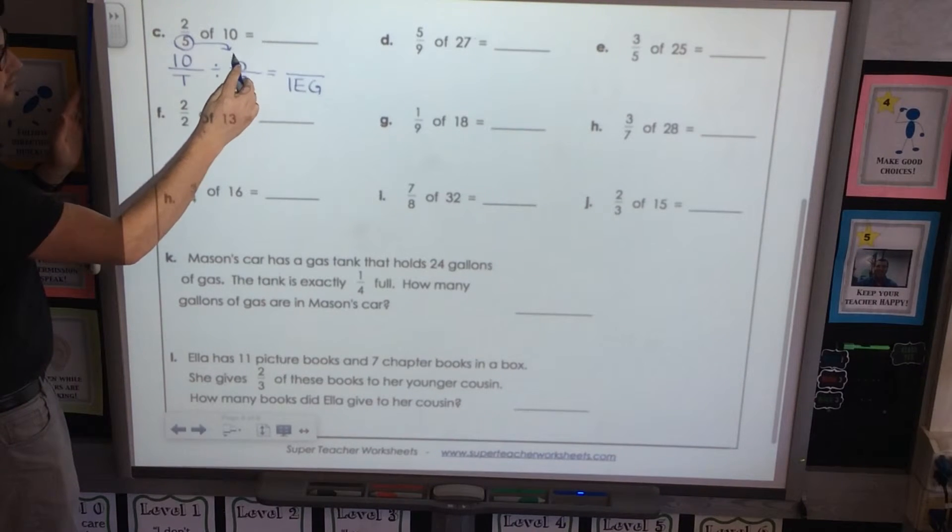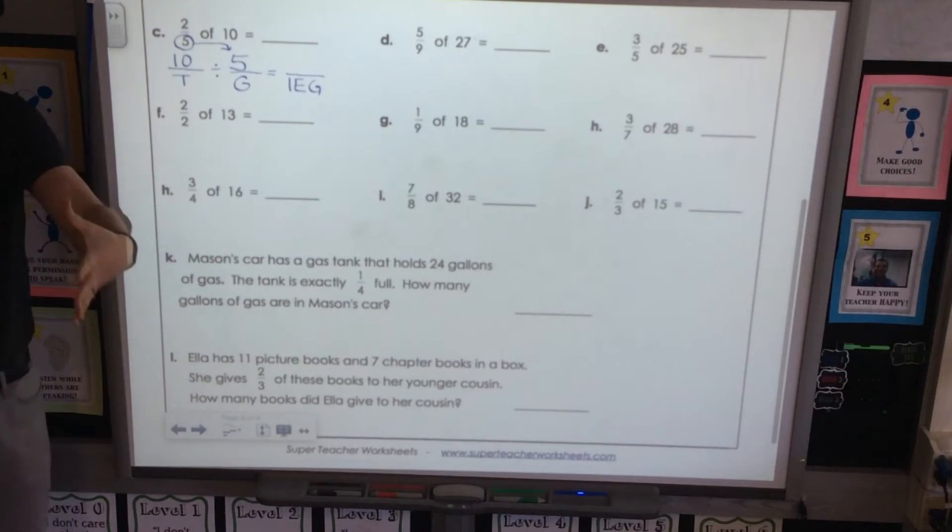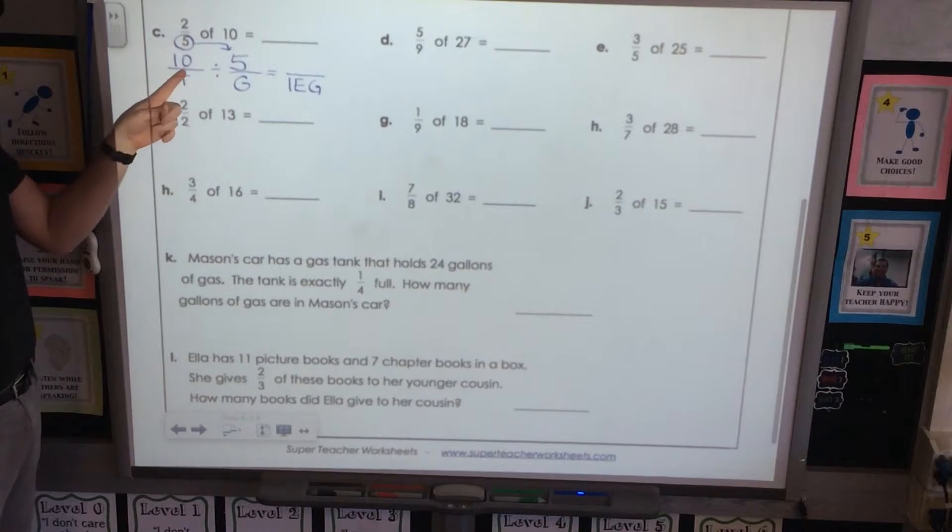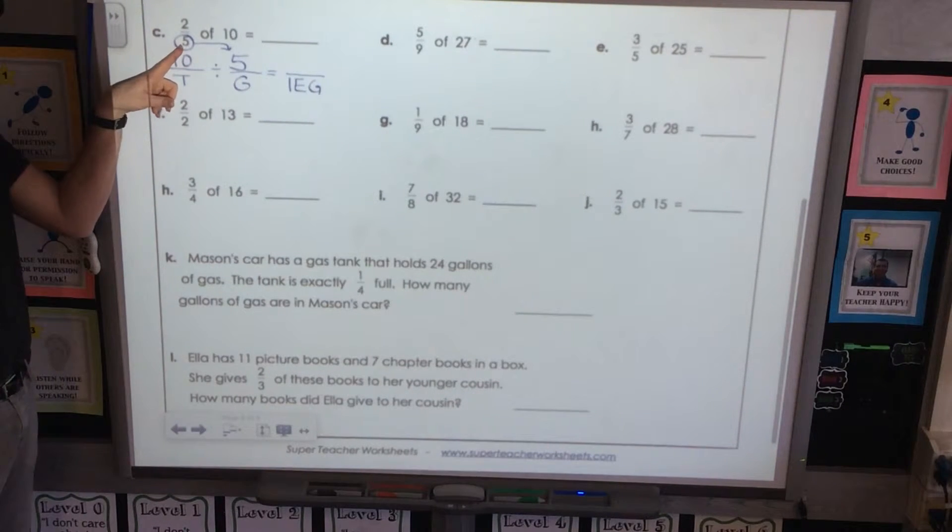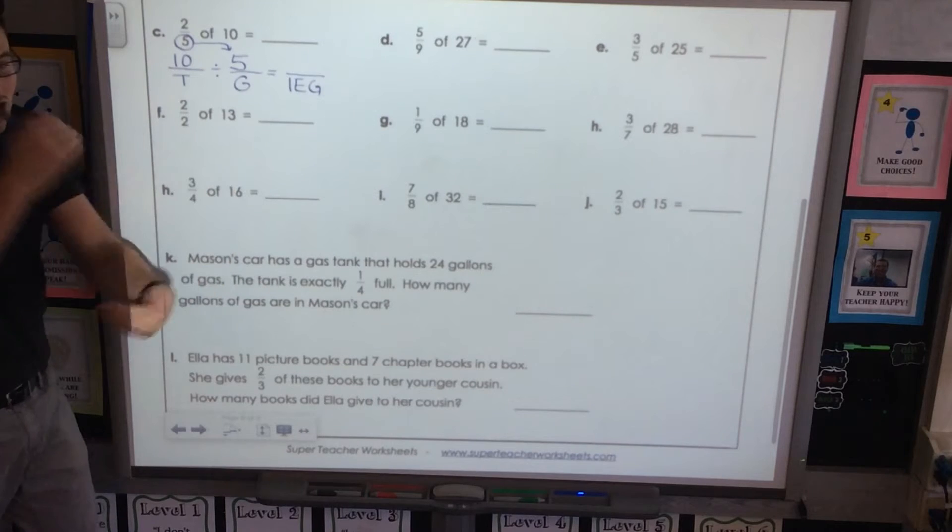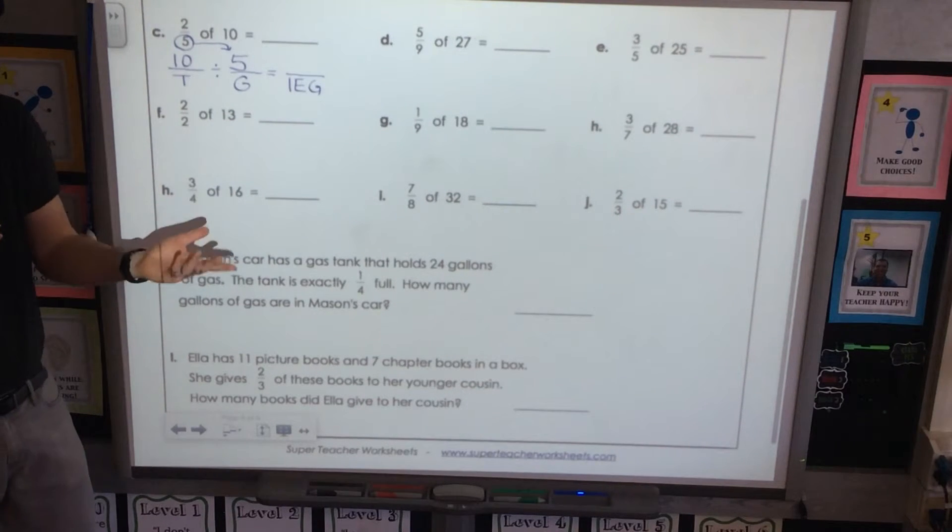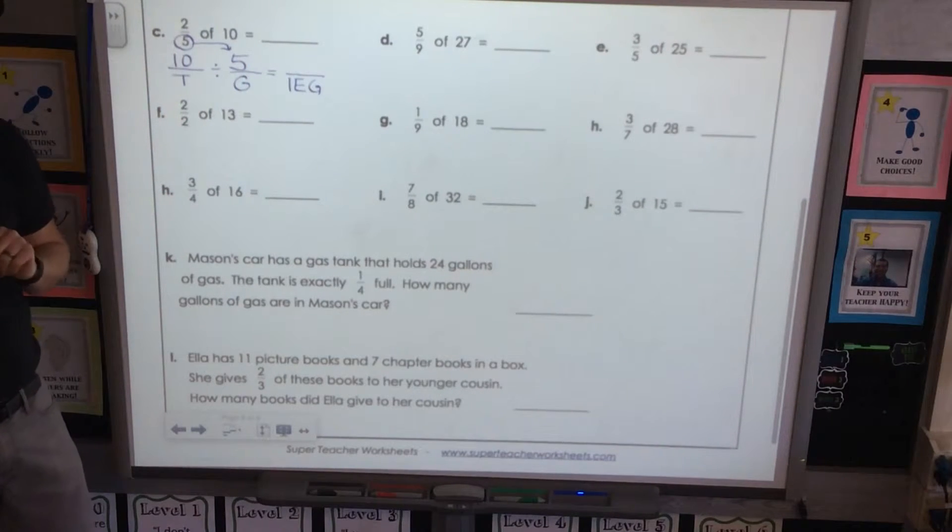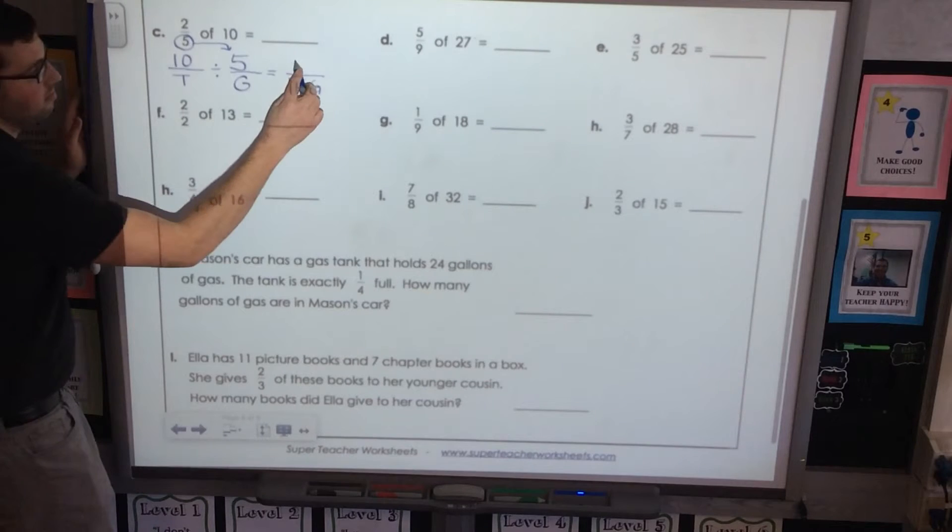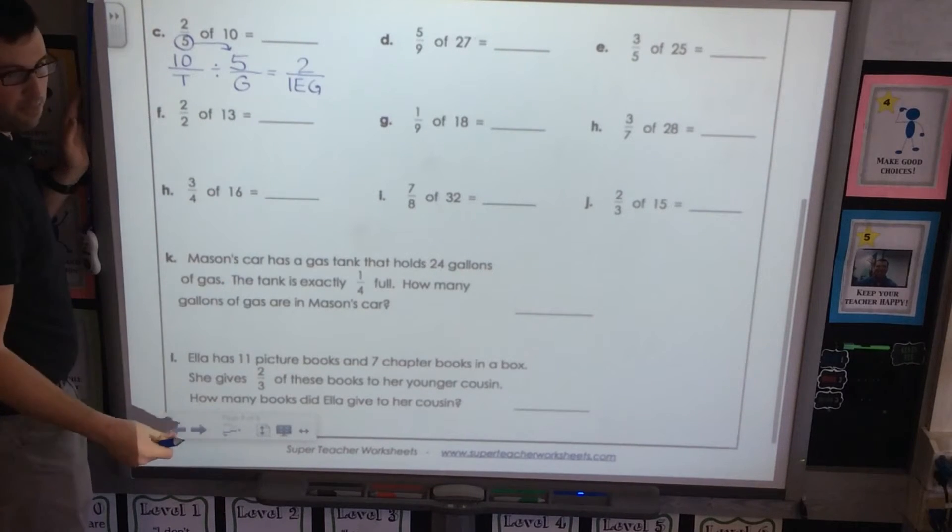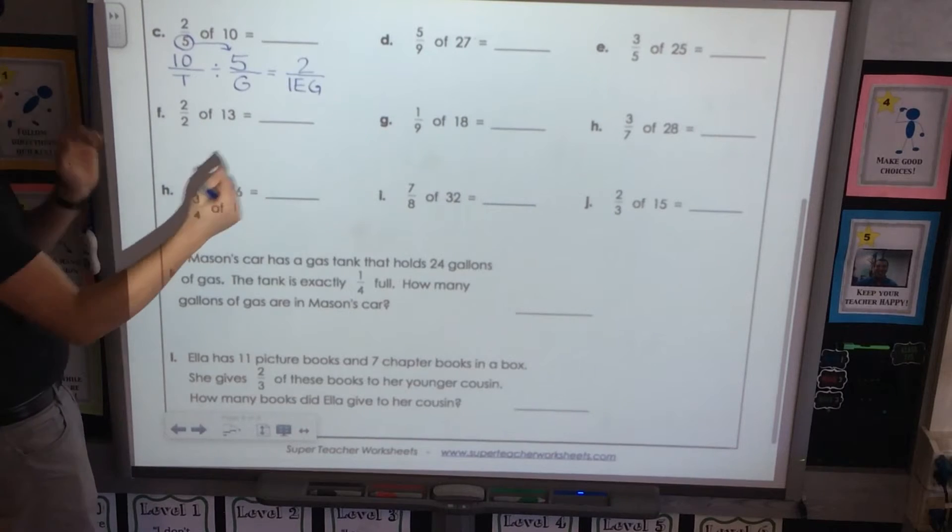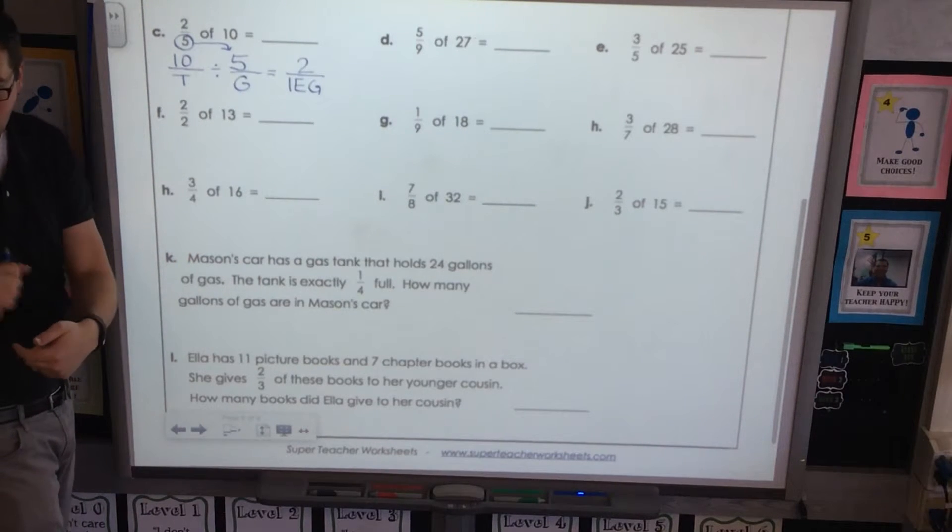So we have five groups in the whole thing. That makes sense. Ten split up into five groups. How many then are in each group? That's my question. Who has this number? What times five equals ten or just ten divided by five? Go ahead Jordan. Yeah. So two. Here we go. Whoop whoop.